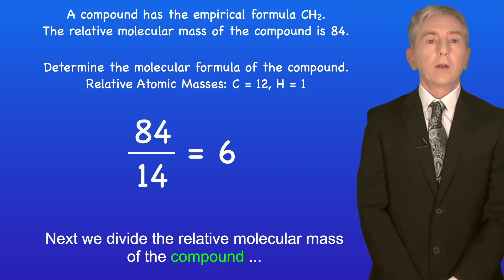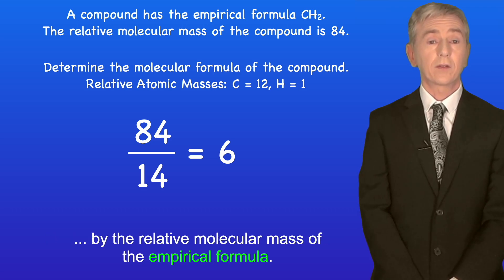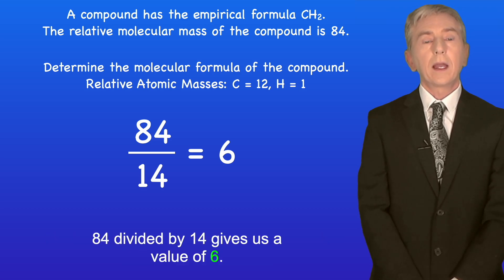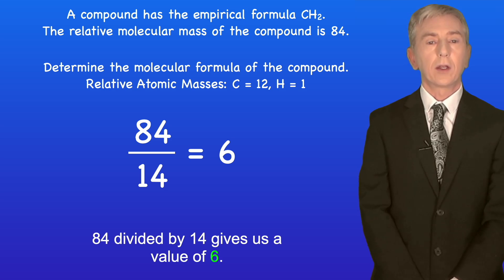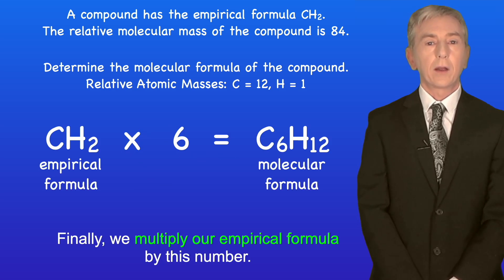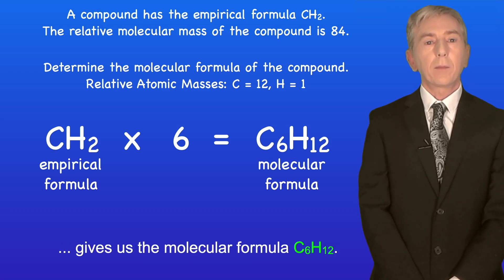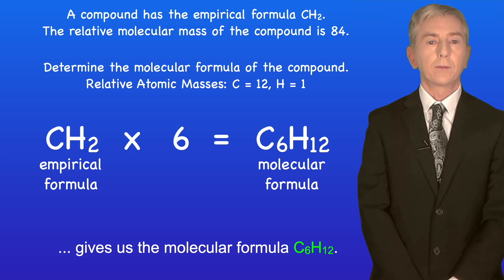This gives us a relative molecular mass of 14 for the empirical formula. Next we divide the relative molecular mass of the compound by the relative molecular mass of the empirical formula: 84 divided by 14 gives us a value of 6. Finally, we multiply our empirical formula by this number, so CH2 multiplied by 6 gives us the molecular formula C6H12.